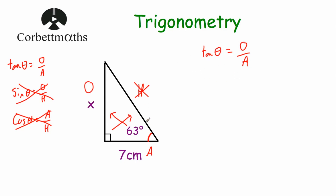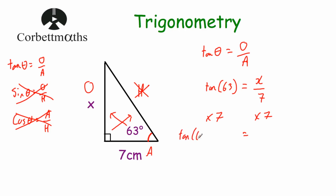Now let's substitute our values. The angle is 63 degrees, so: tan(63) = x divided by 7. I put the 63 in brackets, and it's very important to do so — when typing into a calculator, if you don't close the brackets around 63, the calculator thinks you're doing tan of 63 times 7, which would be the tan of 441, giving the wrong answer. So close brackets around the angle, then multiply by 7. To solve for x, multiply both sides by 7: x = tan(63) × 7.